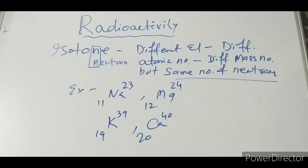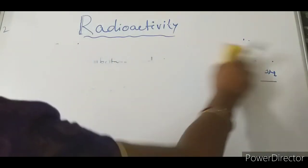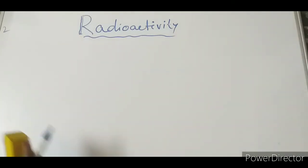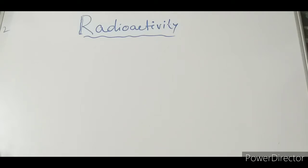Now let us discuss what radioactivity really is. Radioactivity involves taking an unstable nucleus, which is converted to a stable nucleus without any effort. Without any effort — it is a spontaneous emission and disintegration of some rays and particles — so that it is converted to the stable nucleus.